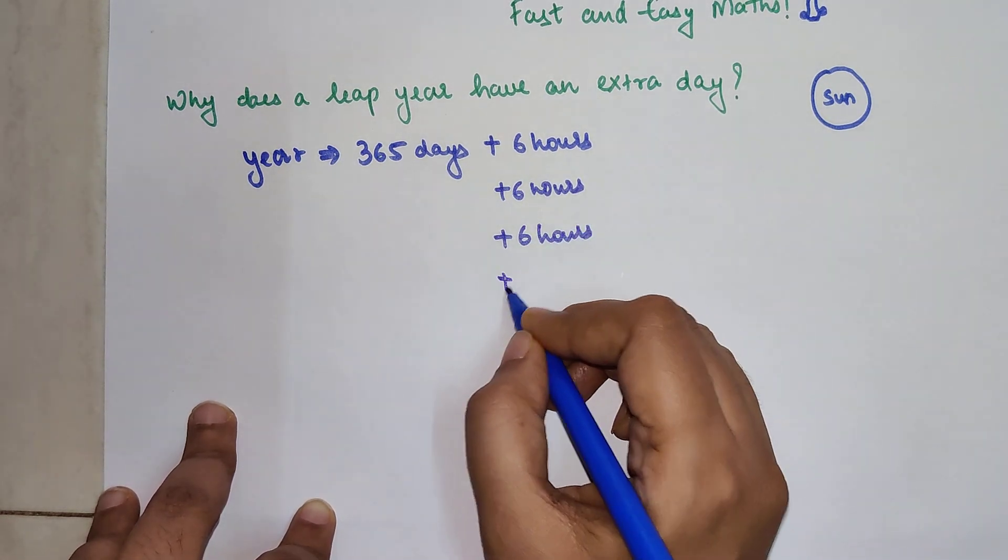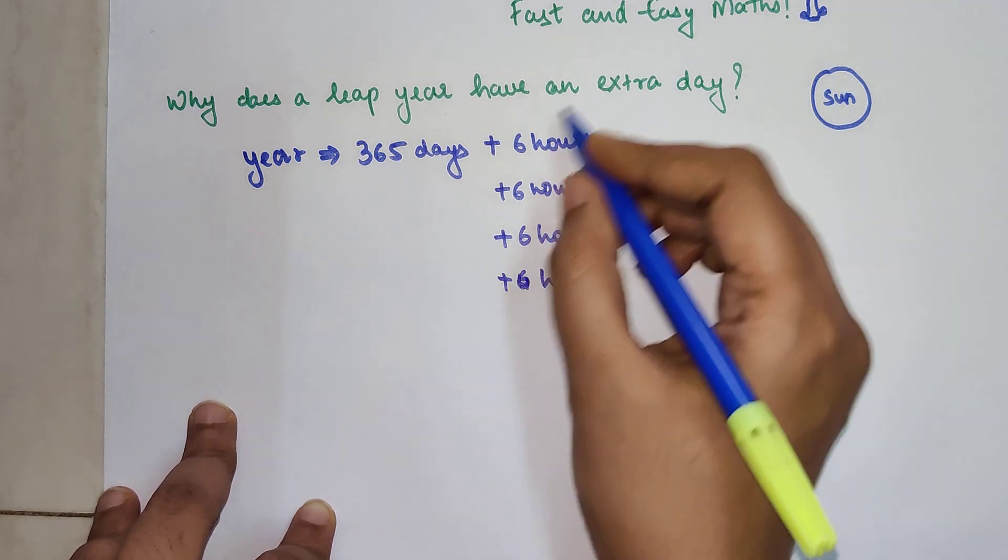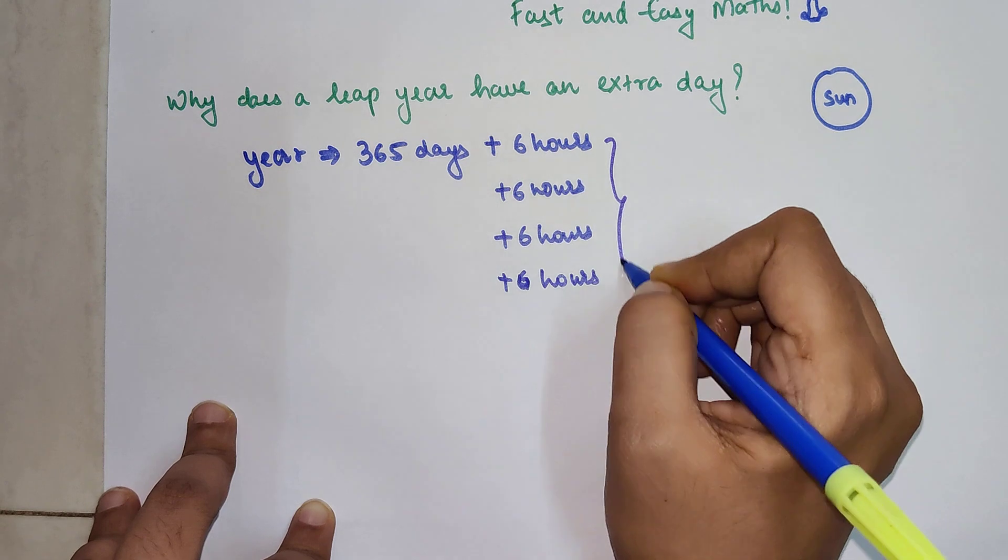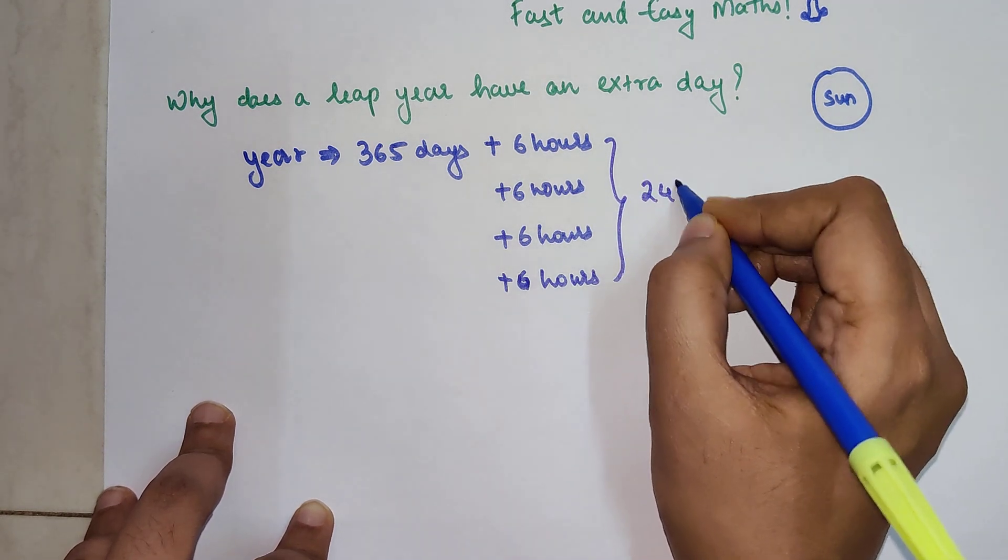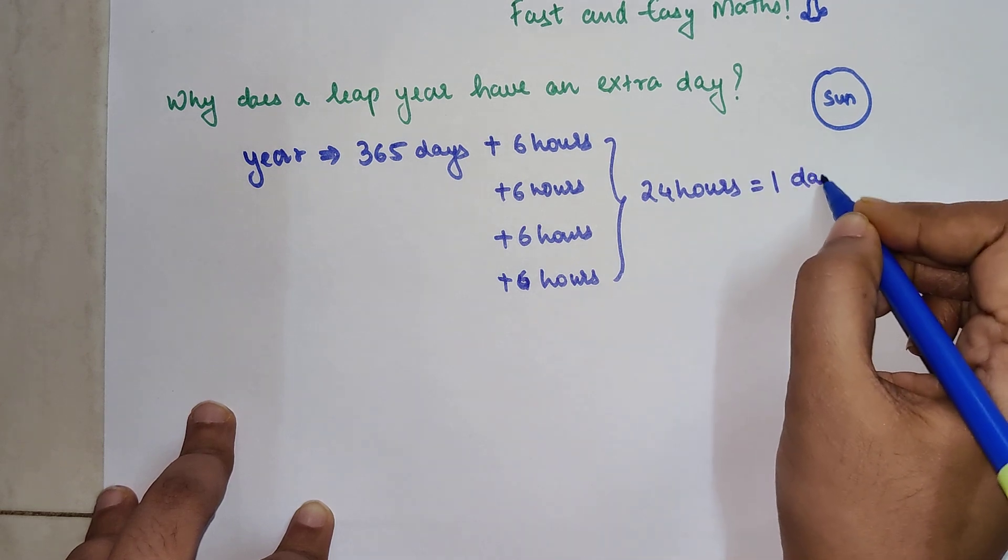So now when it happens in the fourth year, what happens is when you add all of these, this becomes 24 hours. So now 24 hours is equal to 1 day.